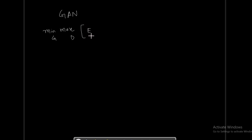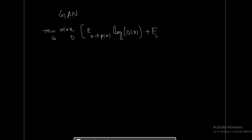The function is: the expected value over x drawn from the data distribution of log of the discriminator output D(x), plus the expected value over z drawn from the z distribution of log of 1 minus D(G(z)).